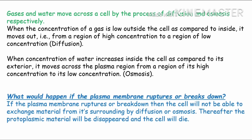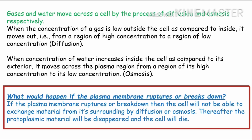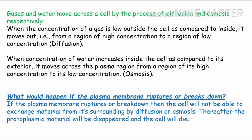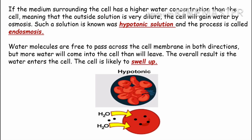Agar plasma membrane toot jaaye toh kya hoga? If the plasma membrane ruptures or breaks down, then the cell will not be able to exchange material from its surroundings by diffusion and osmosis. Cell apne bahar surrounding se kuch bhi material exchange nahi kar paayega. Thereafter the protoplasmic material will disappear and the cell will die. Ab agar aap kisi cell ko solution mein rakhte hain toh teen possibilities hain: first — cell swell karega, second — cell same size ka rahega, aur third — cell shrink kar jaayega, depending on the concentration of water in and out of the cell.